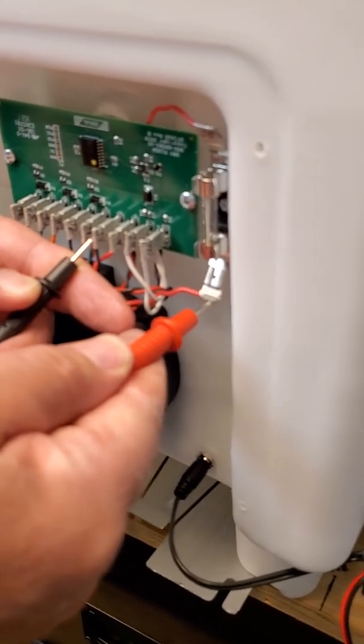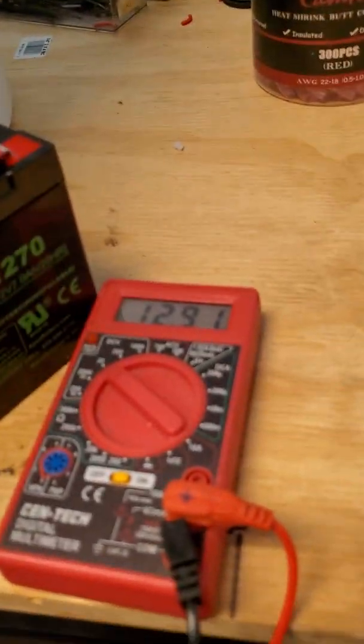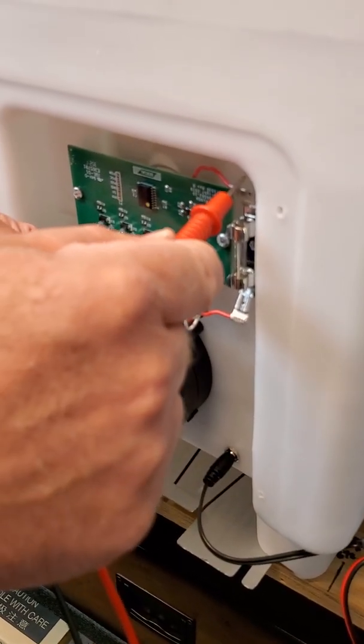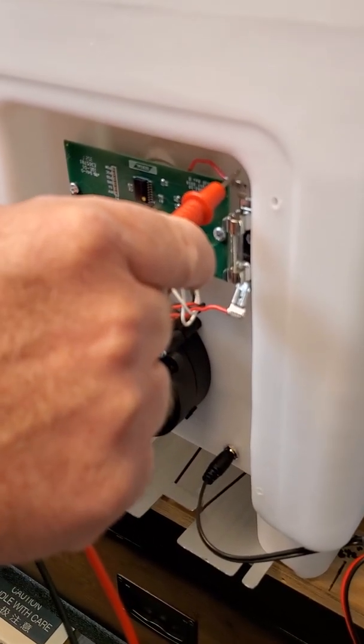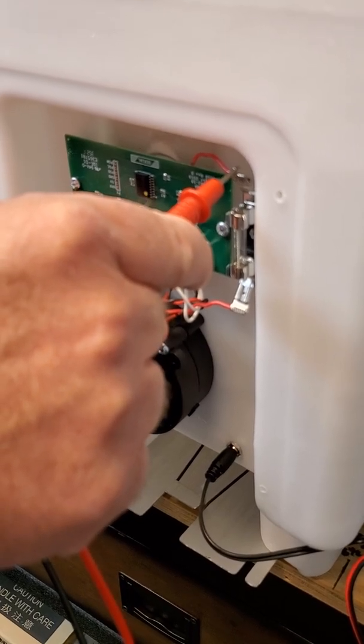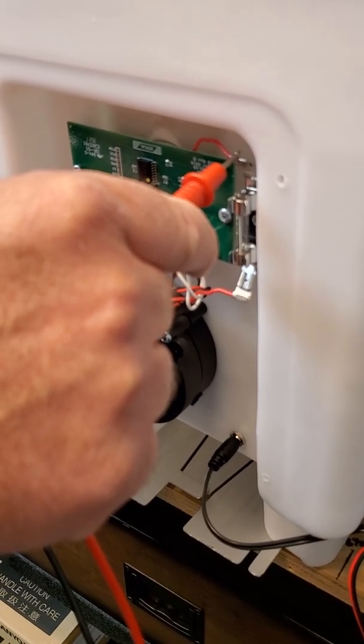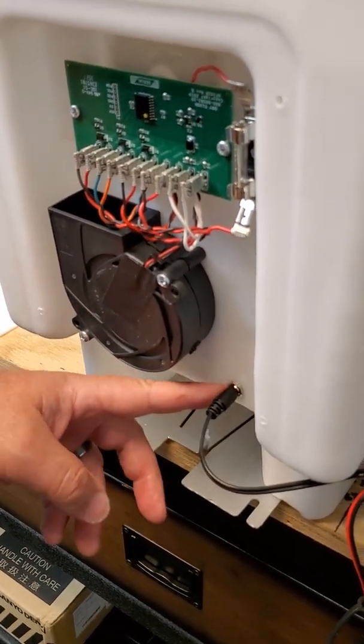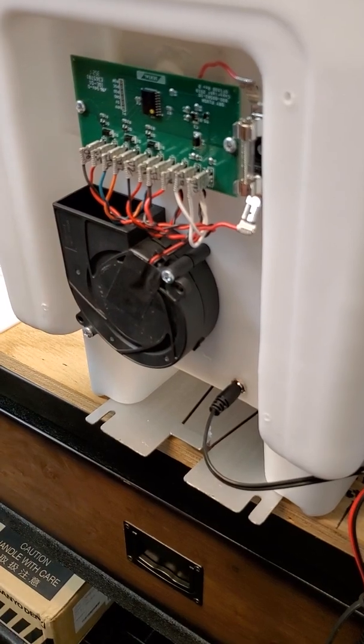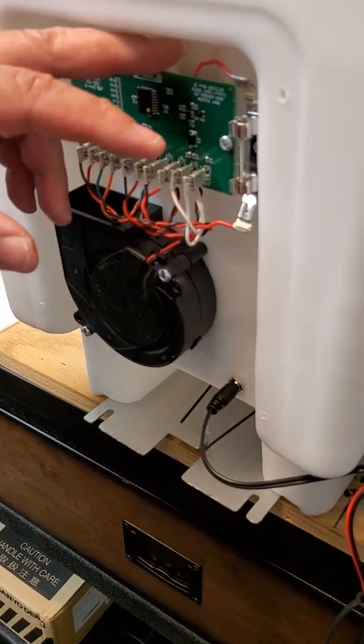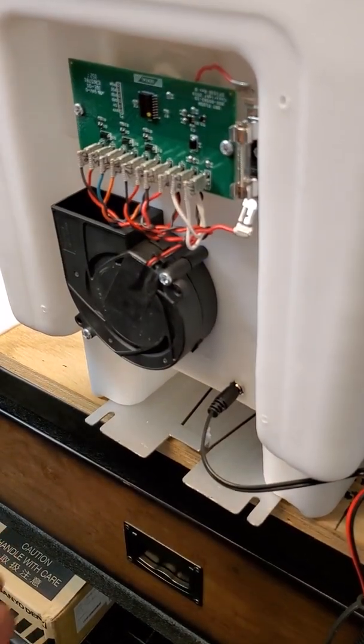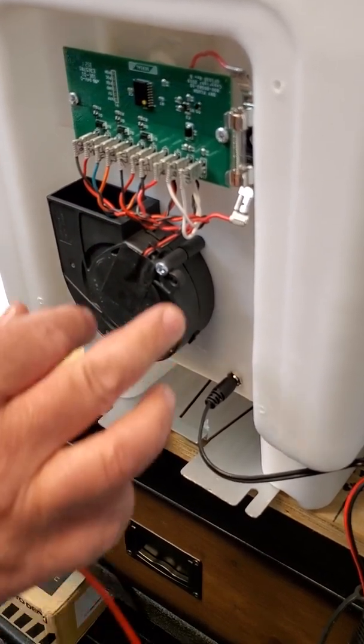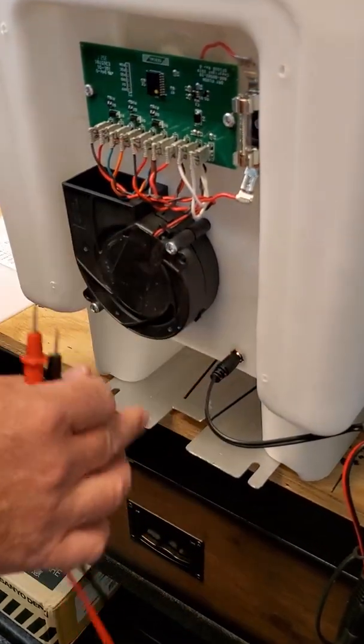Down here we have 12.91 as well. If we were to check up here at the top and there were no voltage, that would be an indication that there is a break in the line from behind here where the power jack comes through, coming up through the back wall and into the fuse. If there were no voltage there, it's very likely that the power jack would need to be replaced.